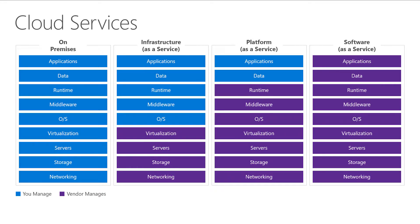So if we think about cloud services, particularly as it pertains to our computing power, we have four components. One is on-premises, and we have IaaS, PaaS, and SaaS — infrastructure as a service, platform as a service, and software as a service.